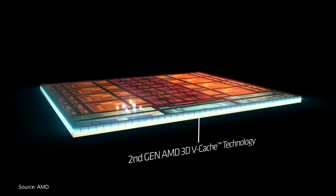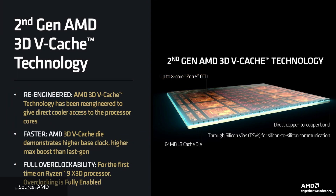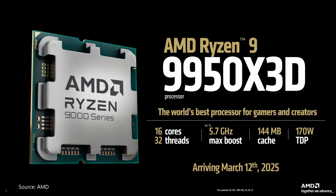With the 3D V-Cache being located beneath the CCD, the 9950X3D's core complex is now better able to interface with the processor's cooler, thereby paving the way for better cooling performance and full overclockability. It's worth highlighting that while the 9950X3D has two CCXs, only one of the CCXs has 3D V-Cache.